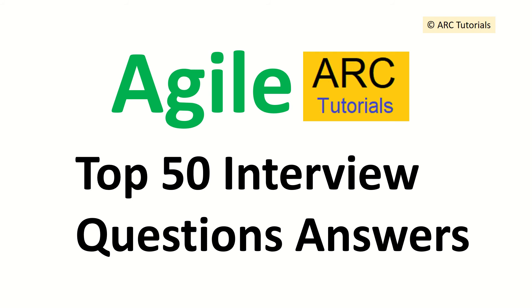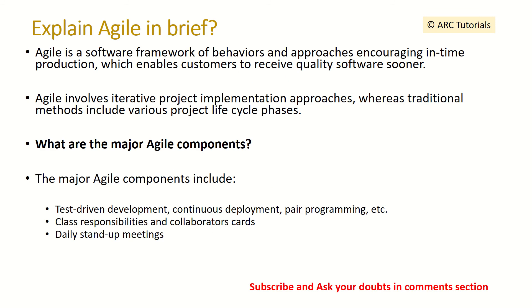The very first question often asked is: what is agile? Agile is a software framework of behaviors and approaches encouraging in-time production, which enables customers to receive quality software faster. Agile involves iterative project implementation approaches where traditional methods like project lifecycle phases are included.